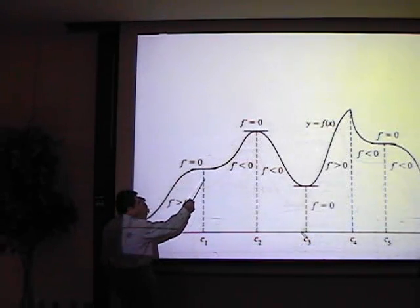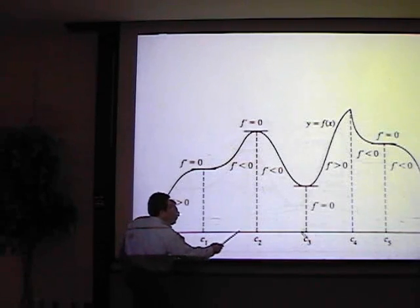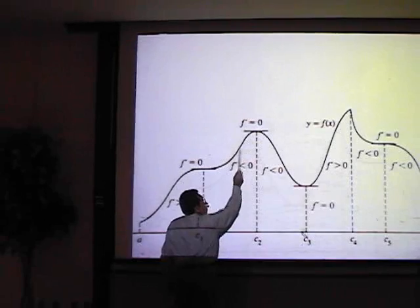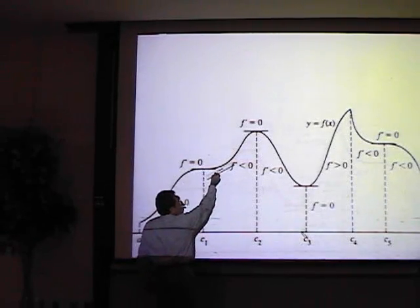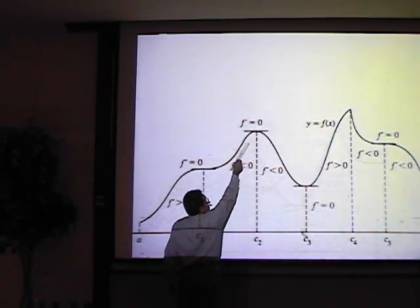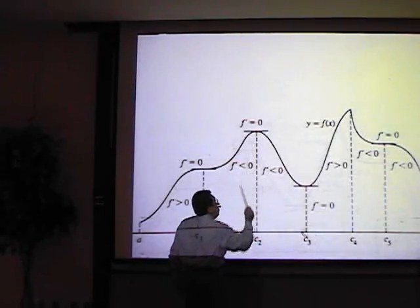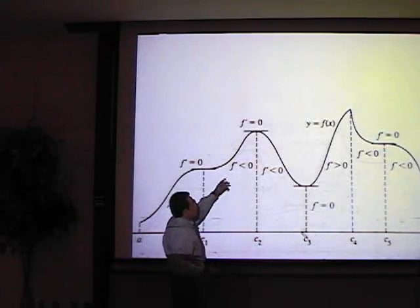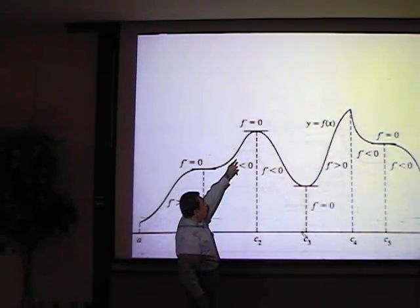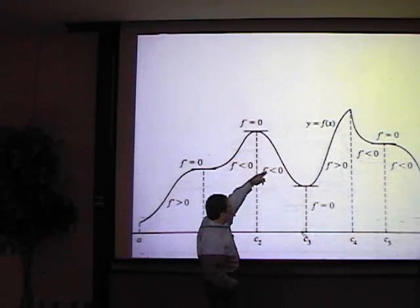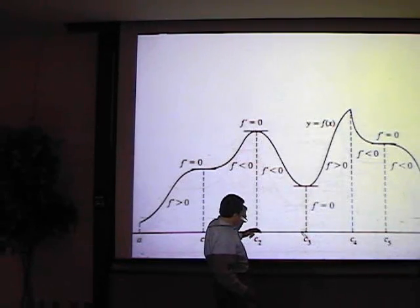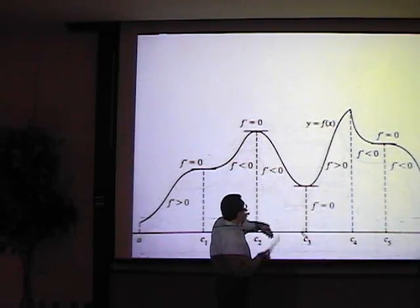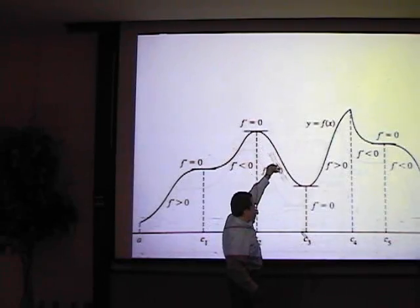As we pass c1 and x values continue increasing, function values are still increasing and the slopes of the tangent lines remain positive all the way through c2. At c2 we again have a horizontal tangent, so f prime equals zero. As we pass c2, from c2 to c3, function values are decreasing and the slopes of the tangent lines are negative.